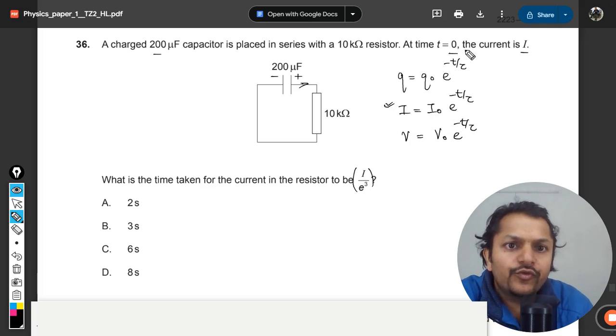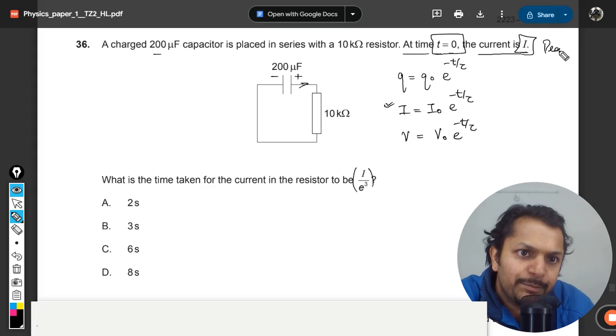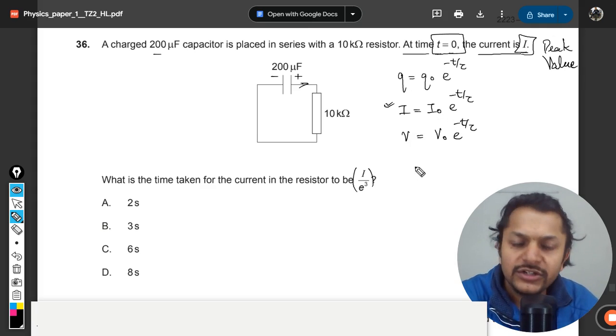The peak value would be happening at t equals zero. So at t equals zero, the current is i. It means that i is the peak value, which I have taken as i₀.